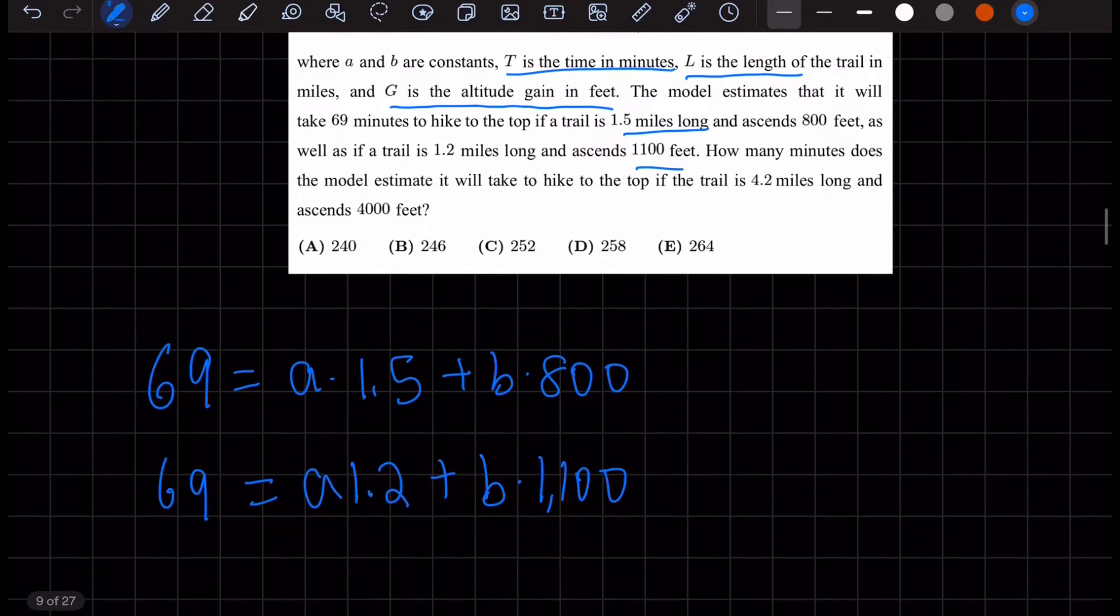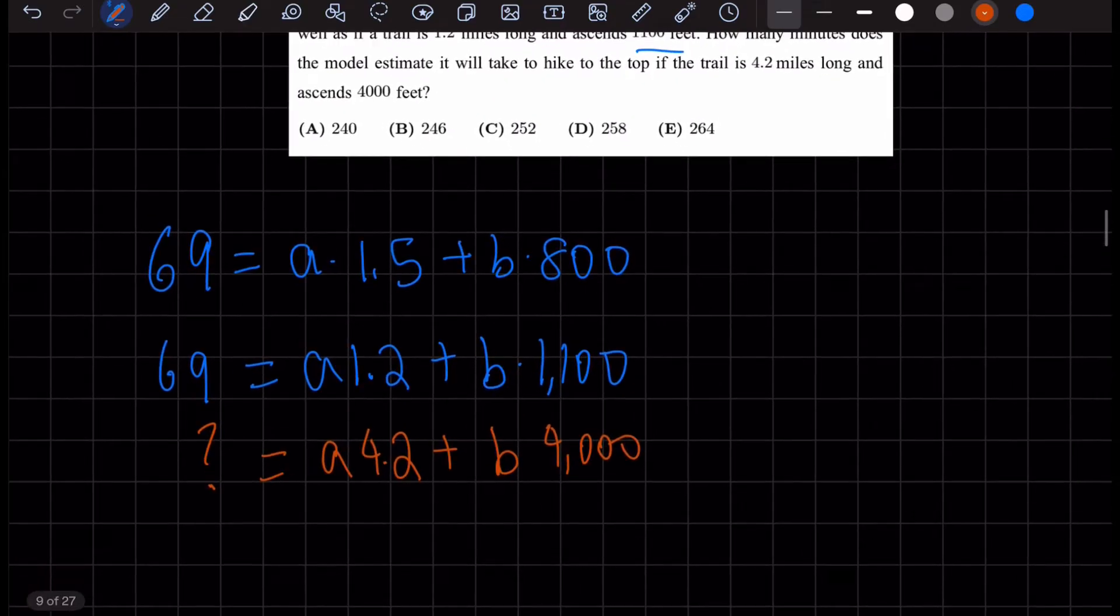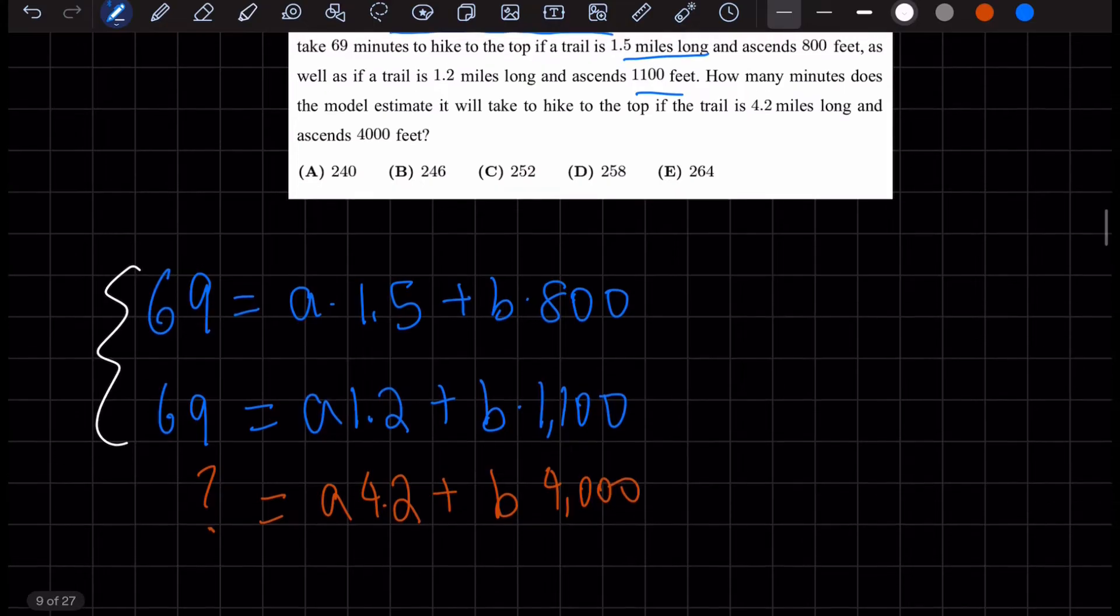How many minutes does the model estimate it would take to hike to the top of the trail if it is 4.2 miles long and ascends 4,000 feet? We want to find out what this equals. So once we're given systems of equations, we can solve for A and B.